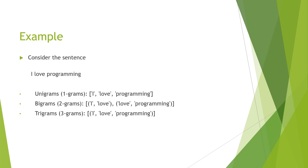Let's see an example. Given the sentence 'I love programming', we generate individual words — 'I', 'love', 'programming' — these are unigrams. For bigrams we combine two words: 'I love' and 'love programming'. For trigrams we combine three words: 'I love programming'.